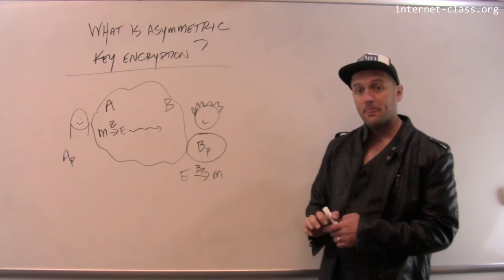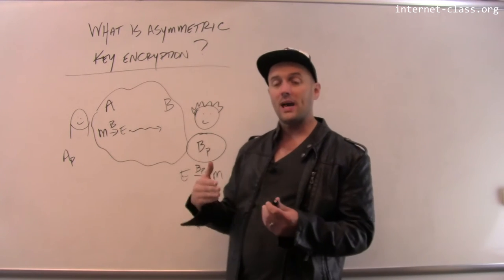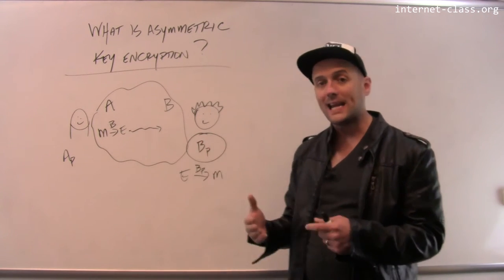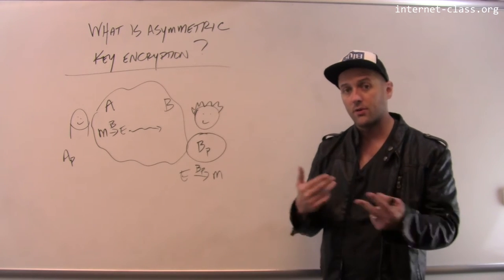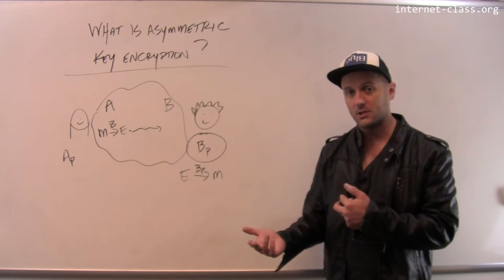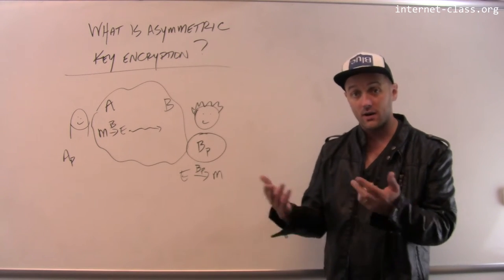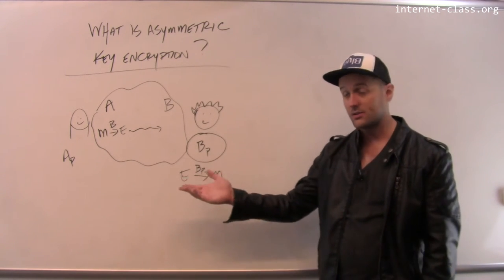Note that Alice and Bob don't have to agree on a secret key used both for encryption and decryption, because doing that is hard over an insecure channel.